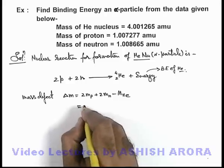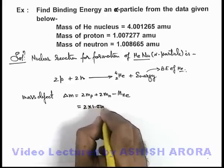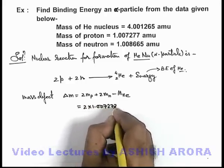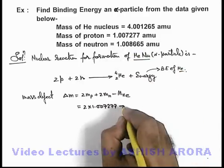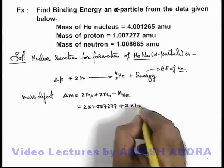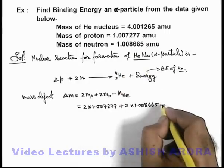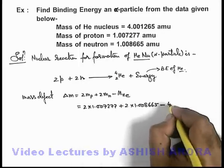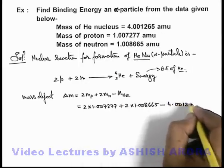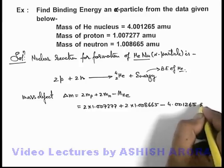And this can be written as 2 × 1.007277, which is already given to us, plus 2 × 1.008665, which is that of neutron, minus mass of helium nucleus, that is 4.001265.